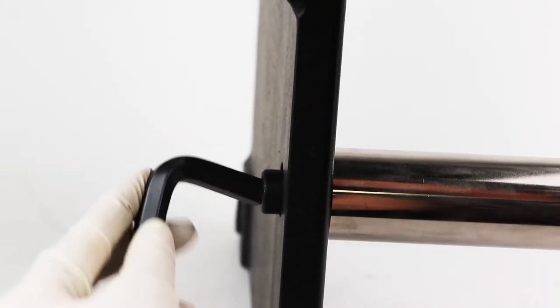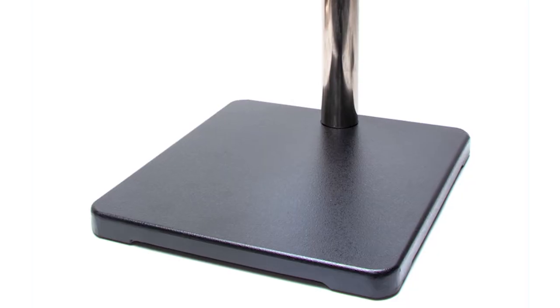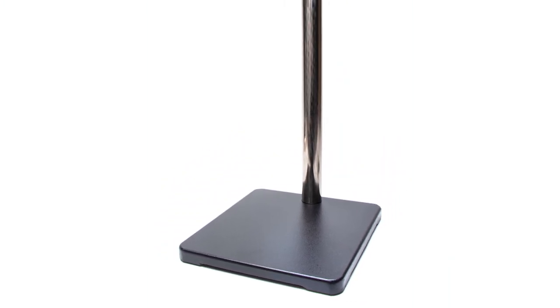Insert the large hex key into the center of the anchoring screw and rotate it clockwise to tighten the anchoring screw. Then carefully set the base flat on the table so that the vertical post is standing upright.